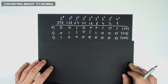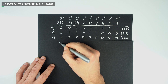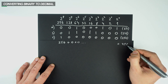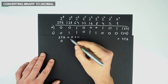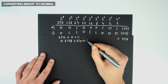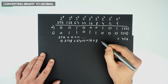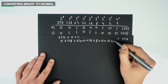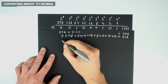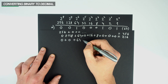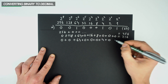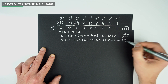We can easily check these results by adding up the values of the columns that have a 1. We know the 256 result is correct because only the first column has a 1, meaning we have nothing to add to 256. For 69: 0 plus 64 plus 0 plus 0 plus 0 plus 4 plus 0 plus 1, which is equal to 69 — so this is correct as well.